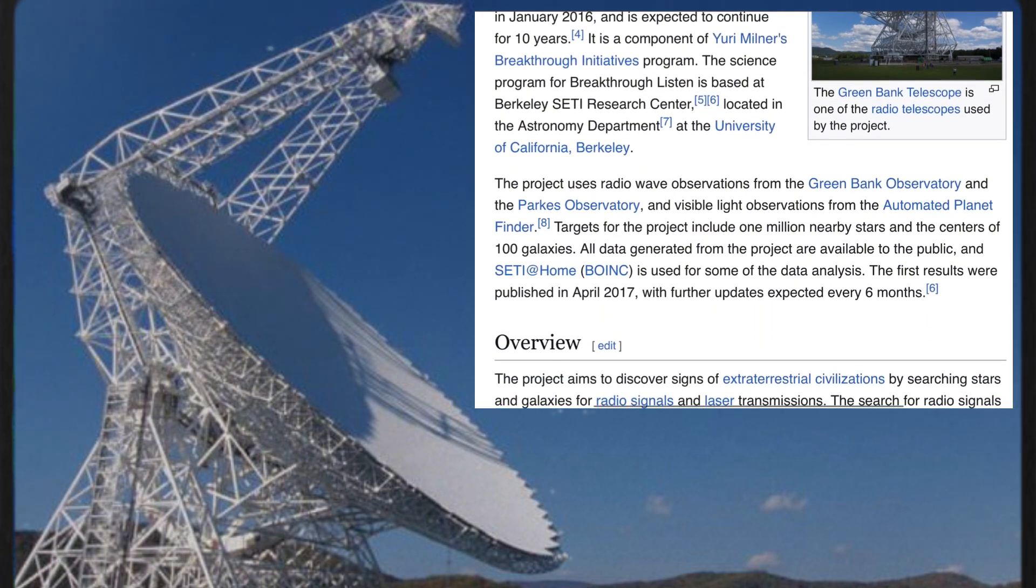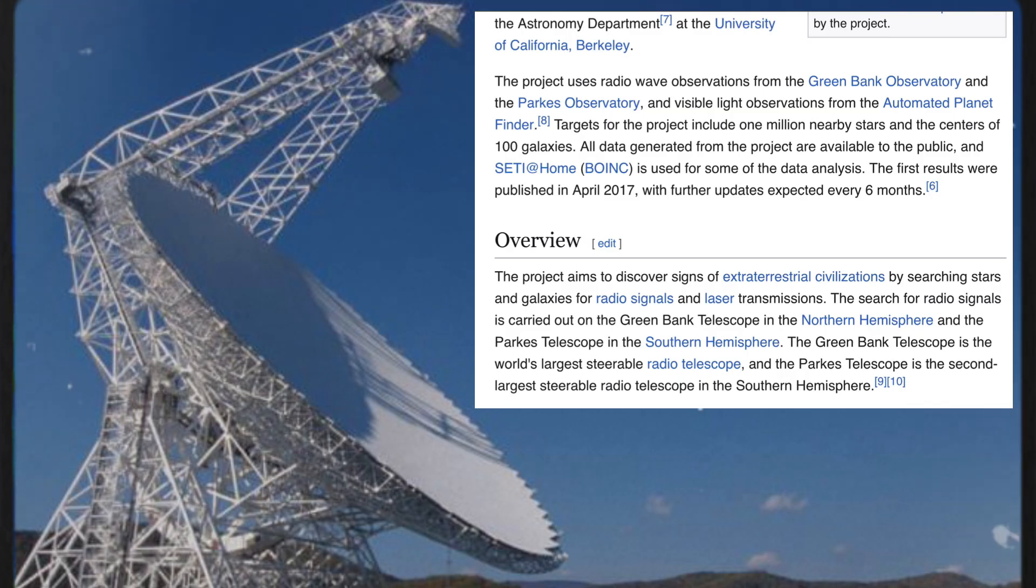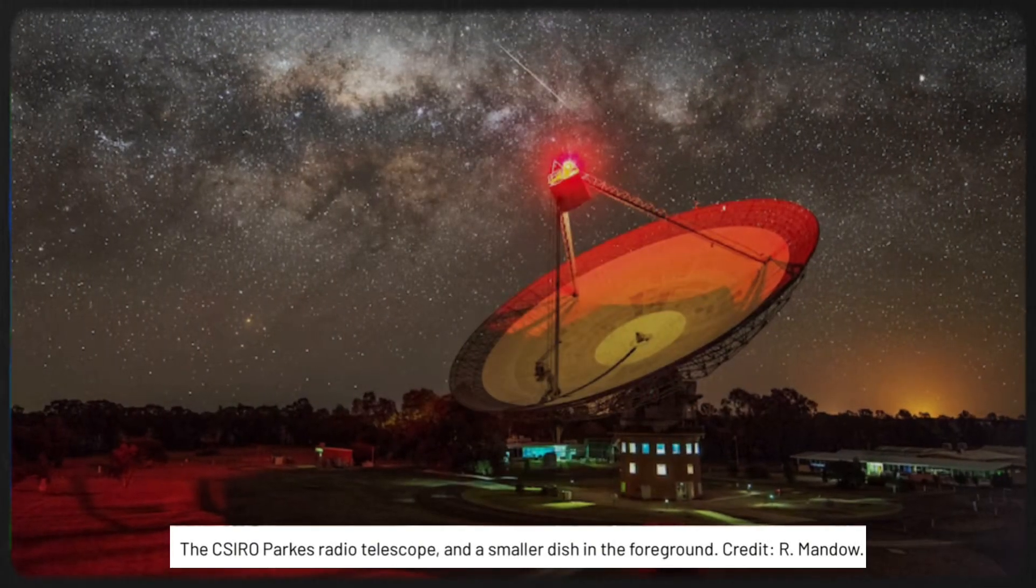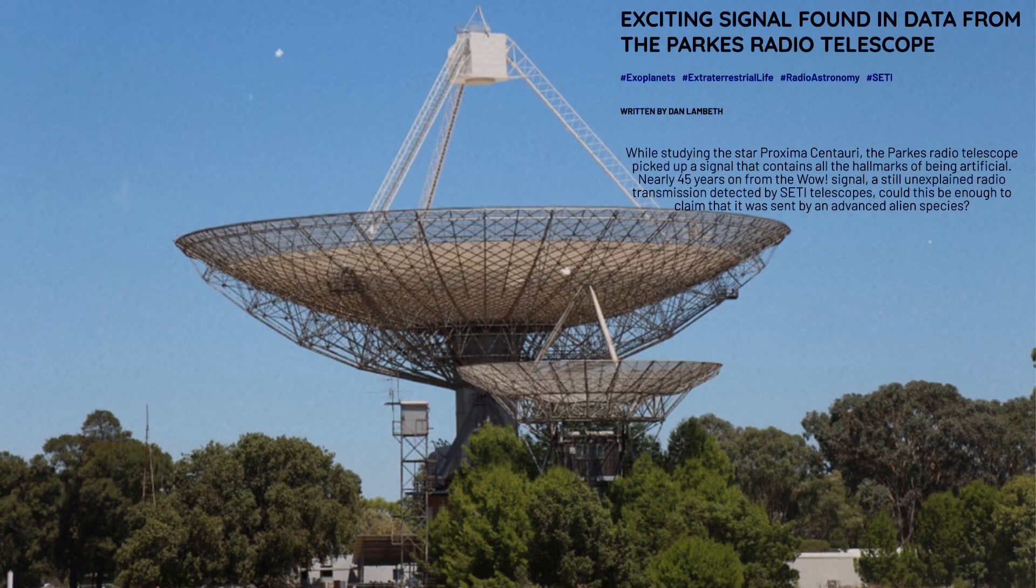The project has used thousands of hours of telescope time and cutting-edge technology to achieve its goal. The CSIRO Parkes radio telescope in New South Wales, Australia, detected the signal during its observation of Proxima Centauri, the closest star to the Sun.